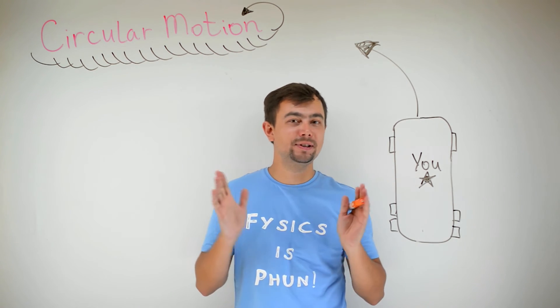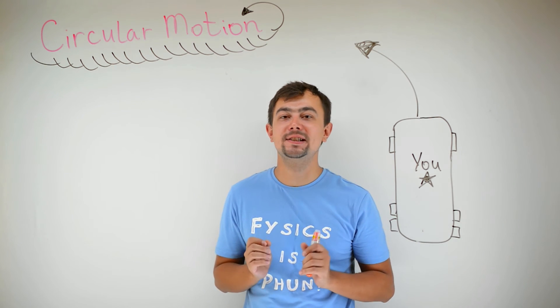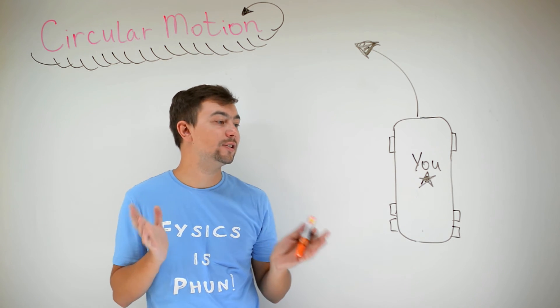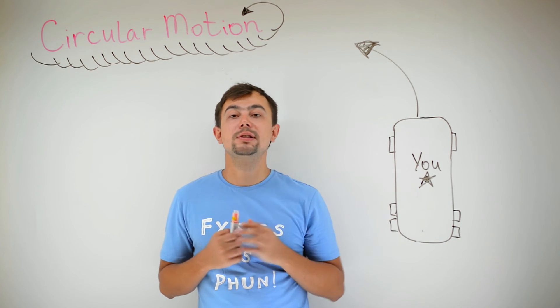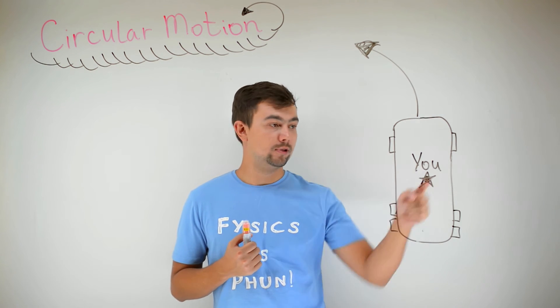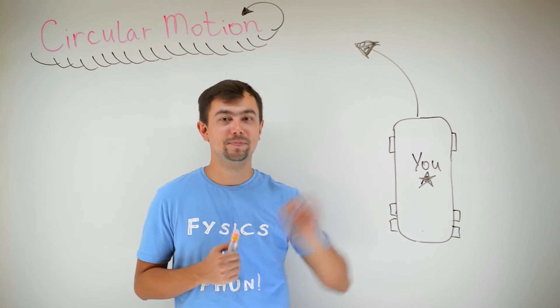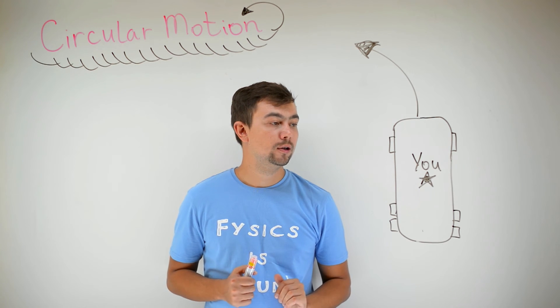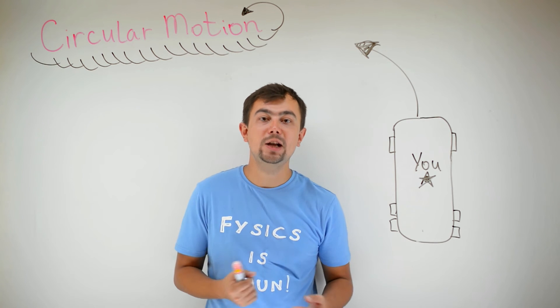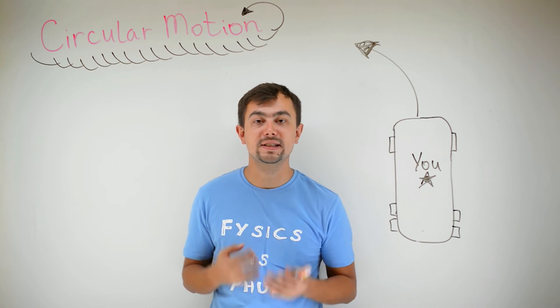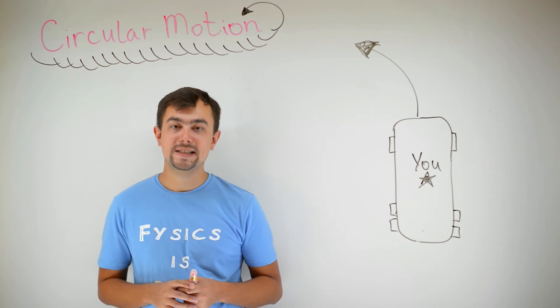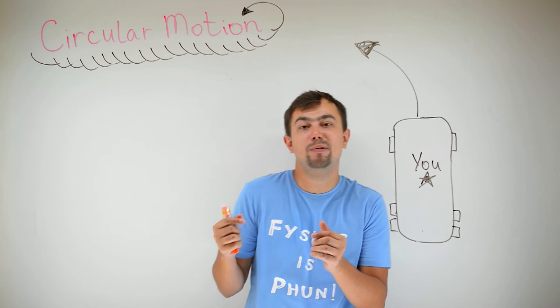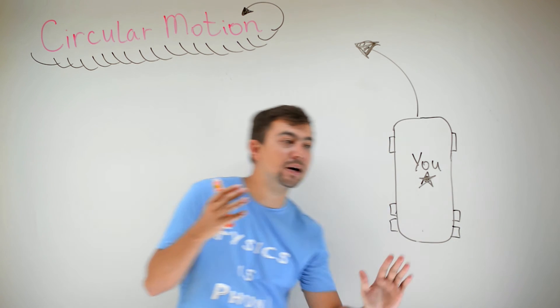And finally, a very simple example with which about 90% of students keep struggling. Although, the answer is pretty simple. Imagine you're sitting in a bus. This is you. And this is the bus. The bus makes a really sharp left turn. Do you feel a resultant force? And what is the direction of the resultant force that you feel? People tend to answer that they feel a resultant force to the right because they feel that their body is moving to the right as the bus turns left.